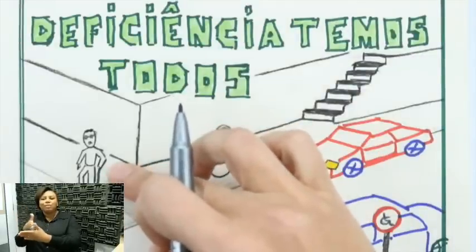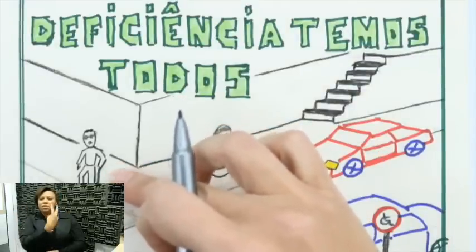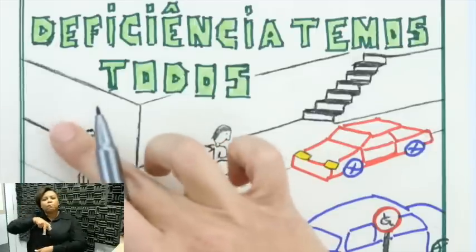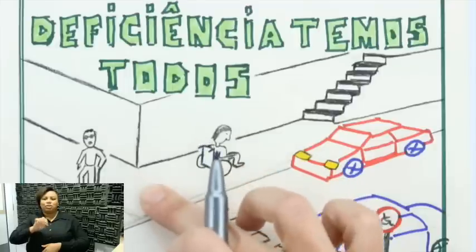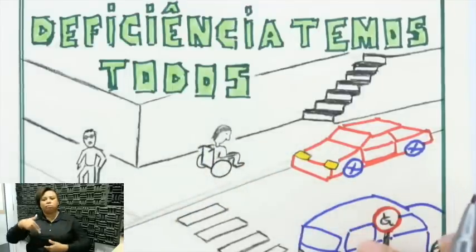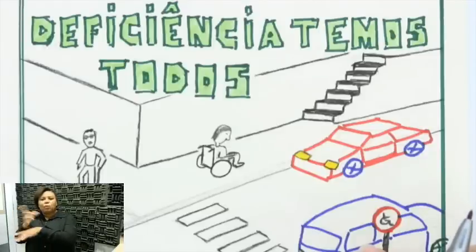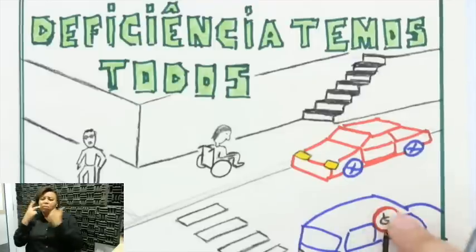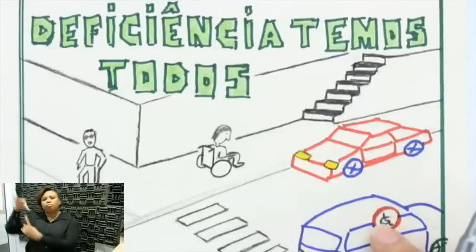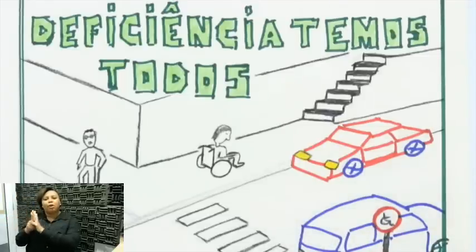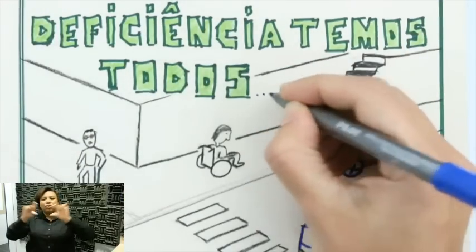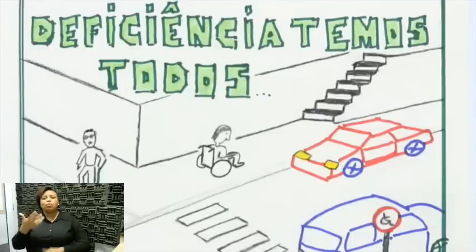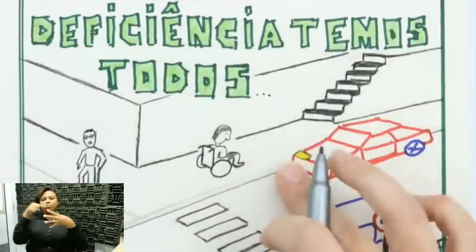Na esquina oposta, tem uma pessoa cega tentando atravessar a rua fora da faixa de segurança, exatamente porque não tem nenhum piso tátil para guiá-la até o lugar adequado. Também tem um carro estacionado em cima dessa faixa de segurança, infelizmente comum aqui no nosso país, e exatamente em frente a uma placa que indica que esse estacionamento é exclusivo para pessoas com deficiência. Em cima dessa imagem está escrito em verde: 'Deficiência temos todos...'